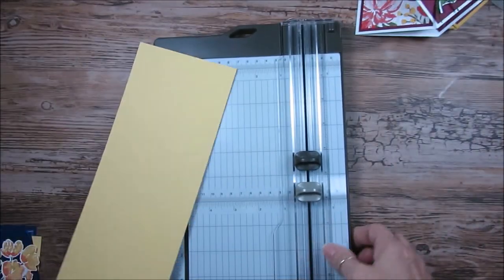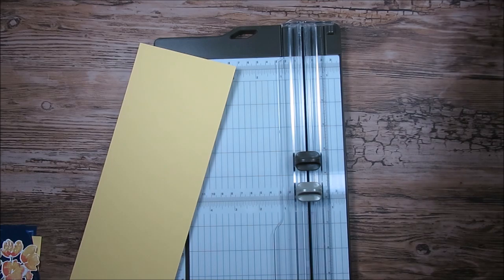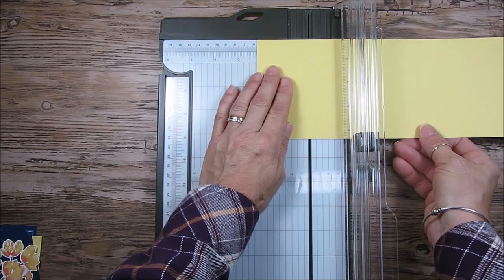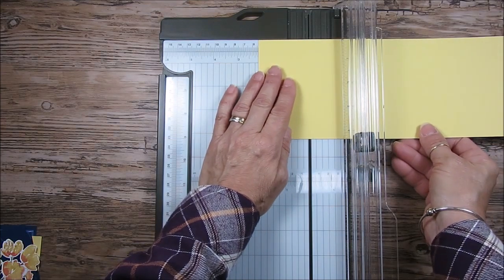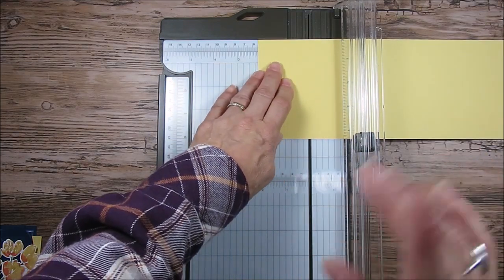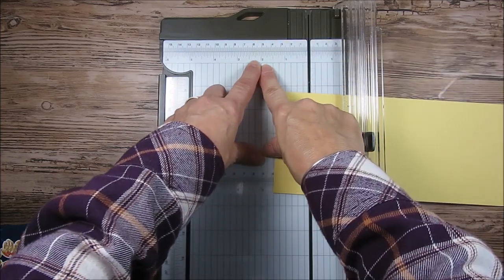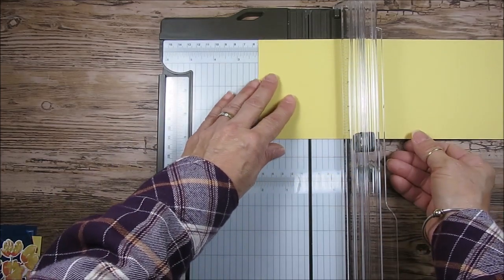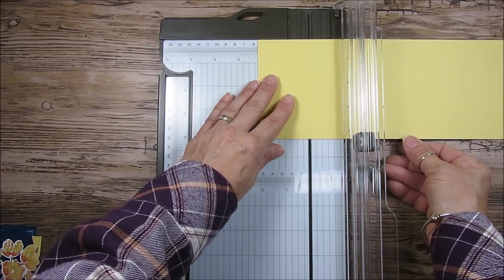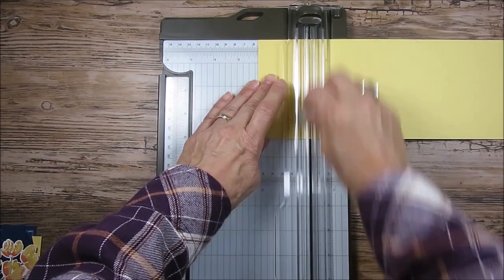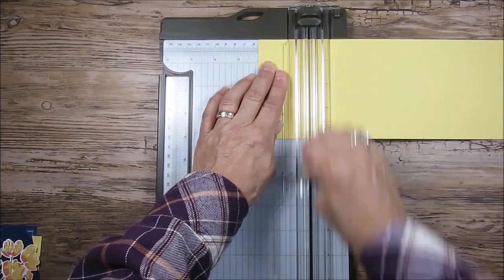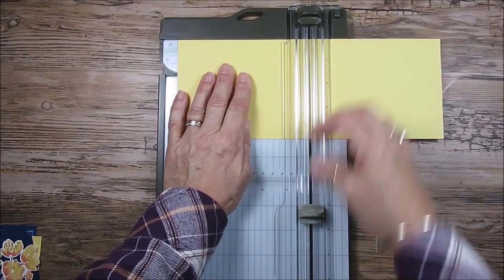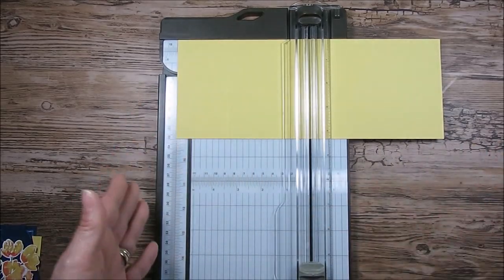That's exactly half piece of cardstock cutting on the long way. Bring your paper trimmer here and we're going to score this at two and one eighth. Not a quarter because that won't work. Two and one eighth, exactly between the two and the quarter. Then we're going to score at five and a half.